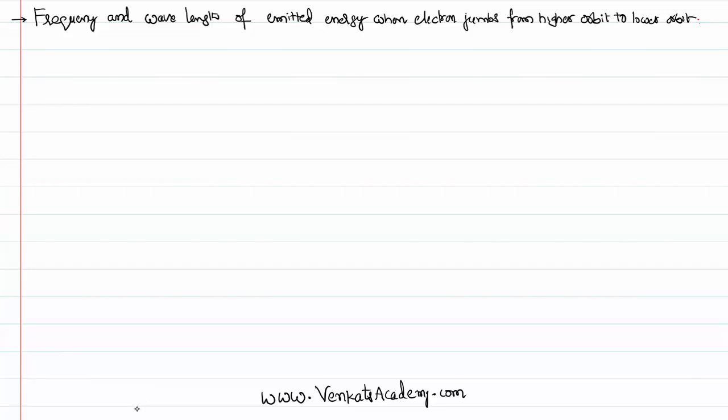Hello everyone. Welcome to this video lesson. In this video lesson, we want to derive an equation for wavelength as well as the frequency of an emitted energy in the format of a photon when electron jumps from higher orbit to lower orbit in a Bohr's atomic model.